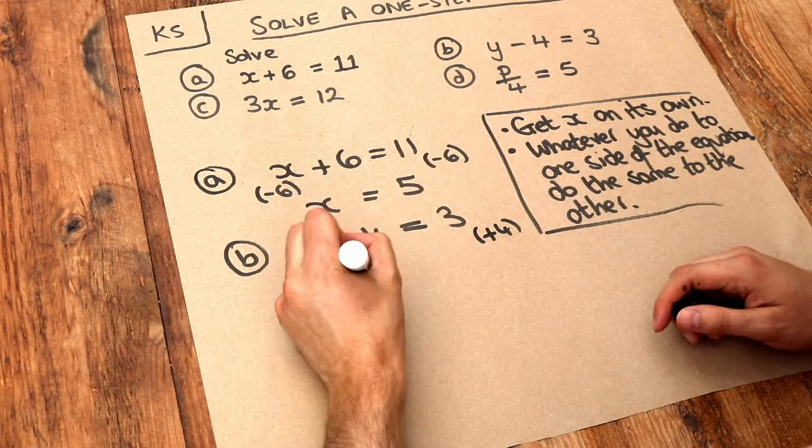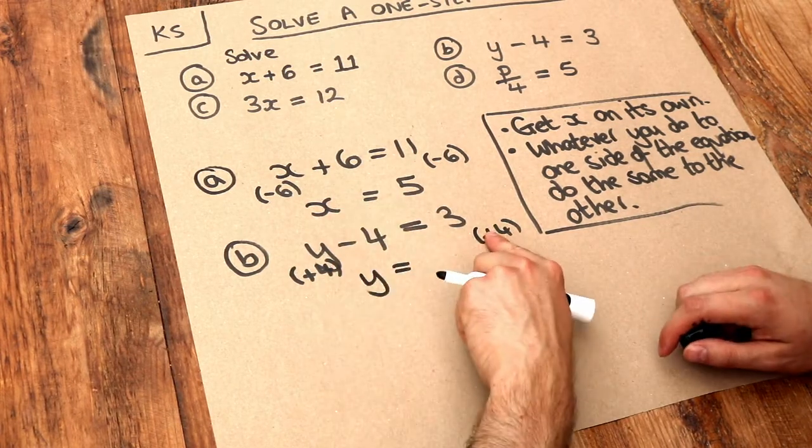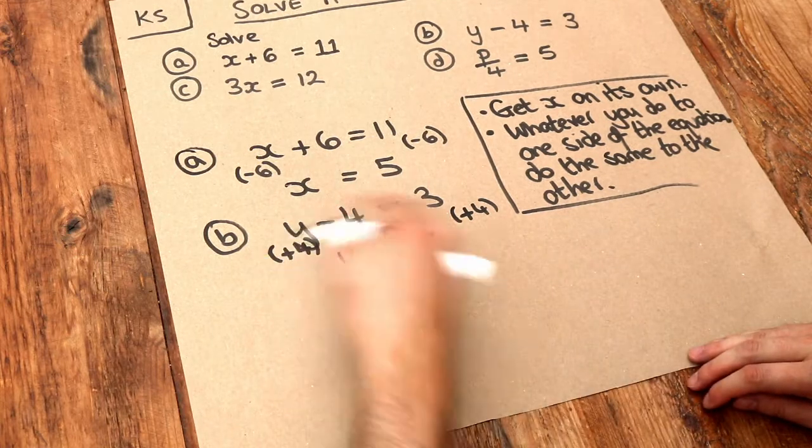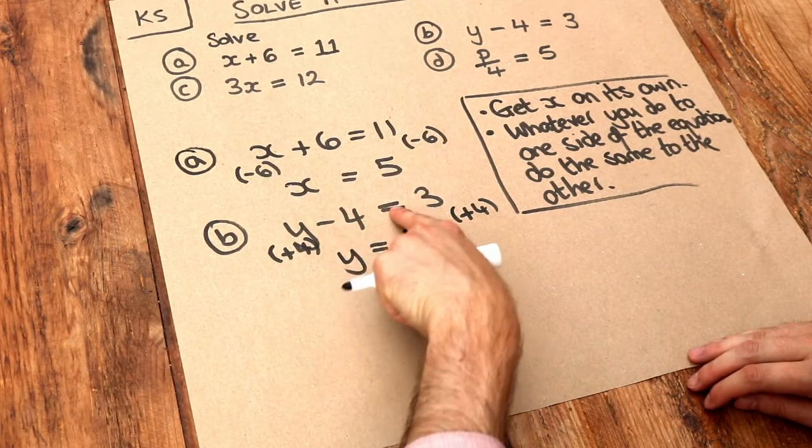It disappears, so we just have y there. And when we add 4 to the right-hand side, we get 7. So we get the 7 as we expected. 7 minus 4 is indeed equal to 3.